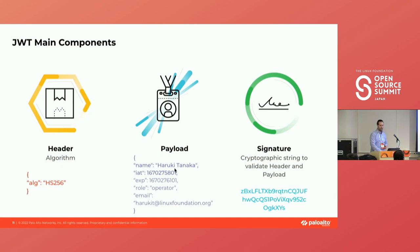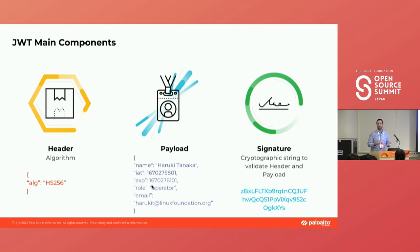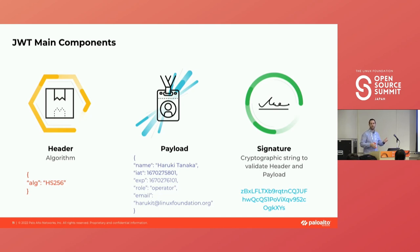In the payload, by example, I gave a name of Haruki Tanaka. There are reserved and custom claims — attributes you can add to your token. EXP for expiration is one way of revoking tokens: once the expiration time has passed, the token is no longer valid. You can also include a role for authorization purposes — whether the user is an operator, administrator, support, or editor — and also the email. Don't try to email that; there's no Haruki Tanaka working for the Linux Foundation.